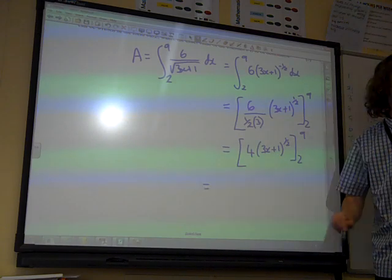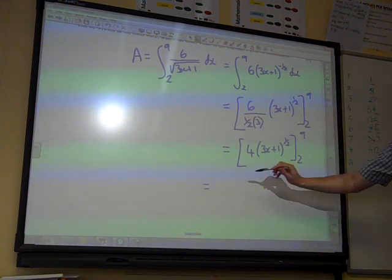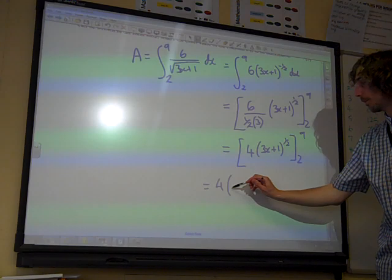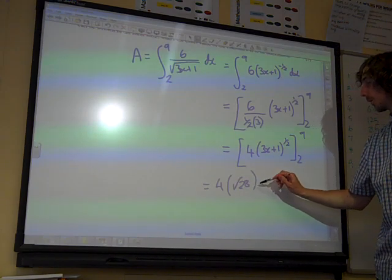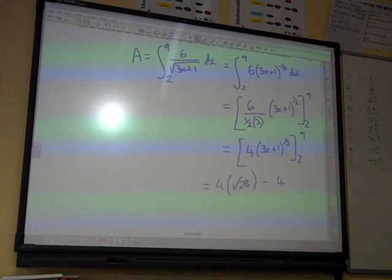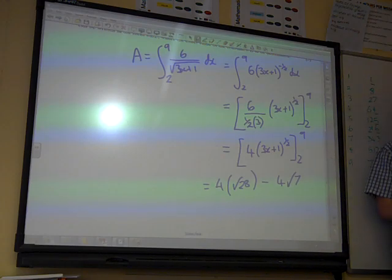Now, we've put the limits in. The 9 in there is going to give us 3 9s would be 7 plus 1 to the 28. Minus 4 lots of 2 3s would be 6 plus the 1 is 7.